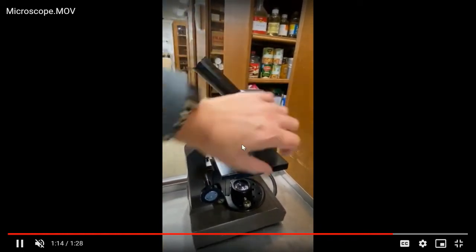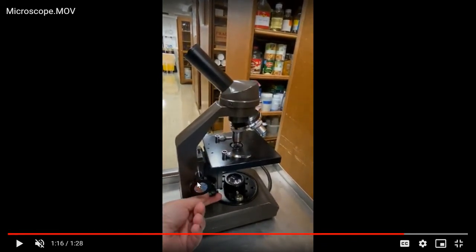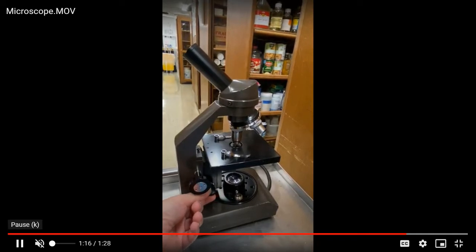Once you get as clear as possible, then you can go to high power objective if you like. Again, in high power, you are never using the course adjustment. You can see just how close that objective lens is, and imagine a microscope slide being right here. So you don't want to move that one. It'll move it way too much. You just want to use the fine adjustment in order to get it into good view.